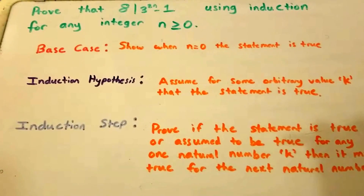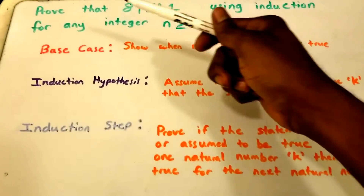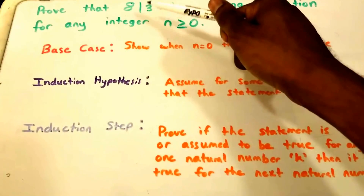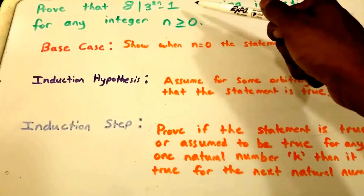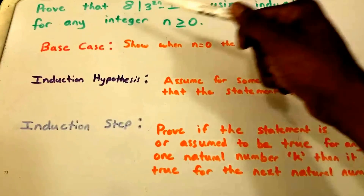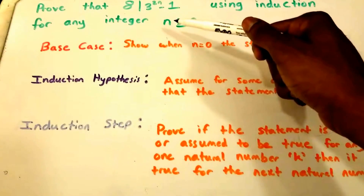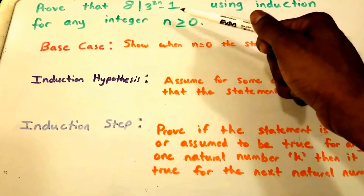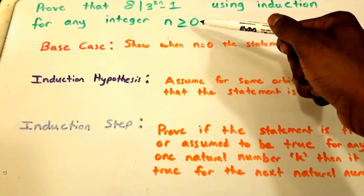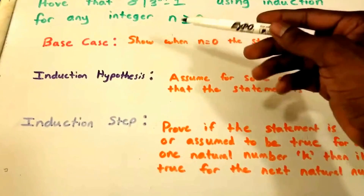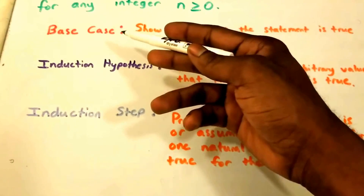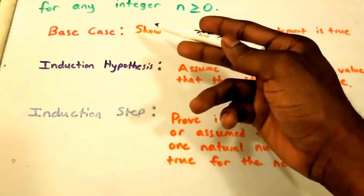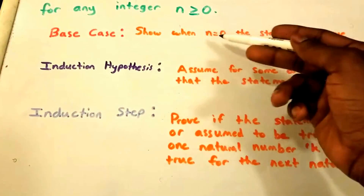Hey guys, welcome to this video. In this video we want to prove that 8 divides 3 to the power of 2n minus 1 using induction, for any integer value n that is greater than or equal to 0. So let's start our base case here.